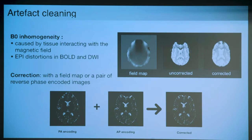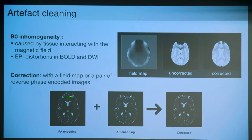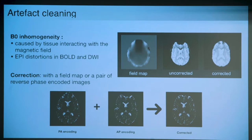Another technique instead of field maps is to scan the whole sequence twice - once with posterior-anterior phase encoding and once with anterior-posterior phase encoding. The result is that where you have stretching in one direction, you have compression in the other. From these two images you can estimate the distortions and get a corrected image. However, this requires more resources to scan with different parameters.